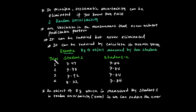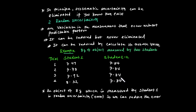Student 1 obtained measurements of 7.49, 7.78, 7.92, and 8.32 grams for an object. Student 2 obtained consistent measurements of 7.8, 7.8, 7.8, and 7.8 grams. Student 2's results are consistent, indicating a systematic error or systematic uncertainty.